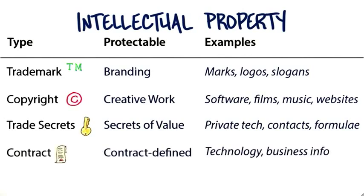Two things that startups run into all the time are contracts and NDAs, which stands for non-disclosure agreements. What's protectable is specified in the contract — either you specify it, or somebody making you sign it specifies it. Examples include technology and business information.